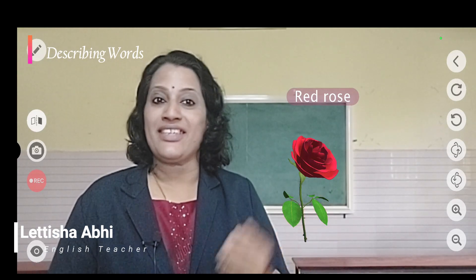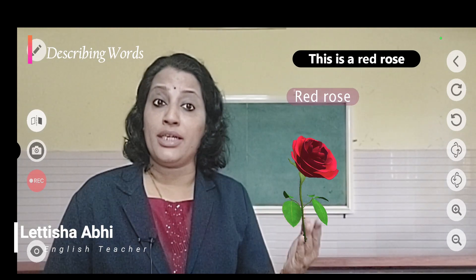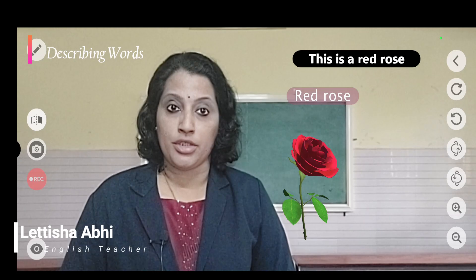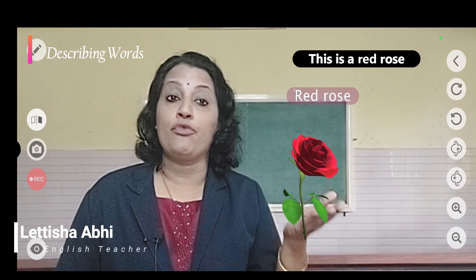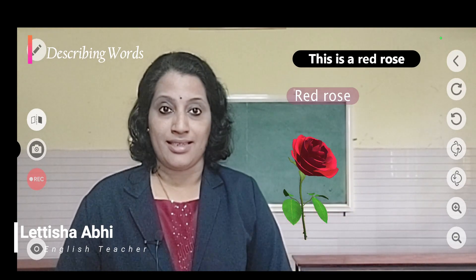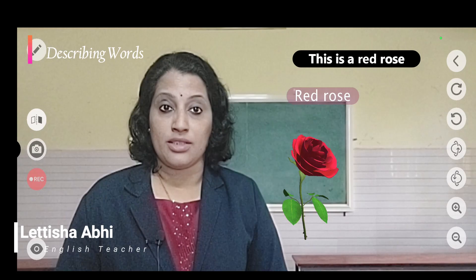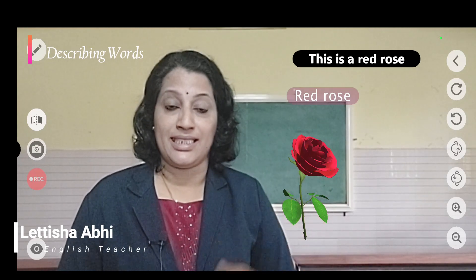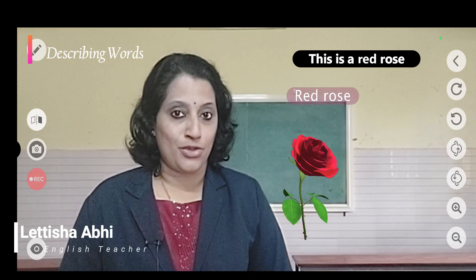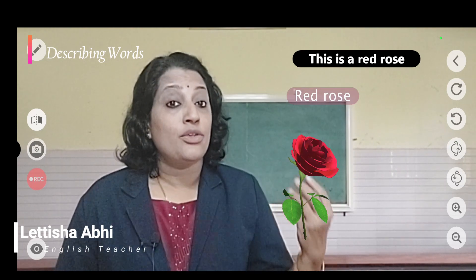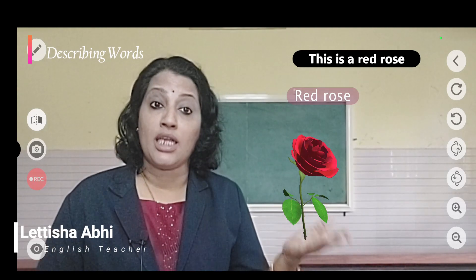Children, what is this? This is a red rose. In this sentence, 'this is a red rose,' which is the naming word? The naming word is rose, because it is the name of a thing, a name of a flower — rose. And which is the word which is telling us more about this rose? That is red. Red is telling us more about the color of the rose. So, red is the describing word — it is telling us more about the noun rose.